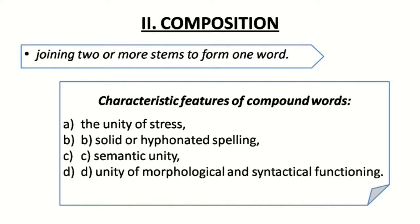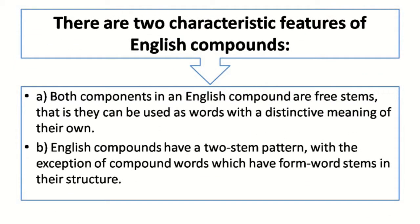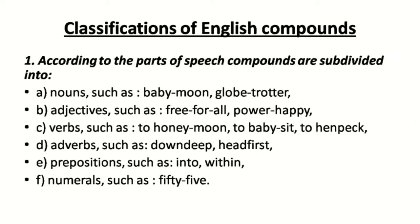Composition is joining two or more stems to form one word. Characteristic features of compound words are: unity of stress, solid or hyphenated spelling, and semantic unity and unity of morphological and syntactical functioning. Two specific features of English compounds are: both components are free stems that can be used as independent words, and English compounds have a two-stem pattern — with exceptions for compound words that have form-word stems in their structure. According to part of speech, compounds are divided into nouns, adjectives, verbs, adverbs, prepositions and numerals.